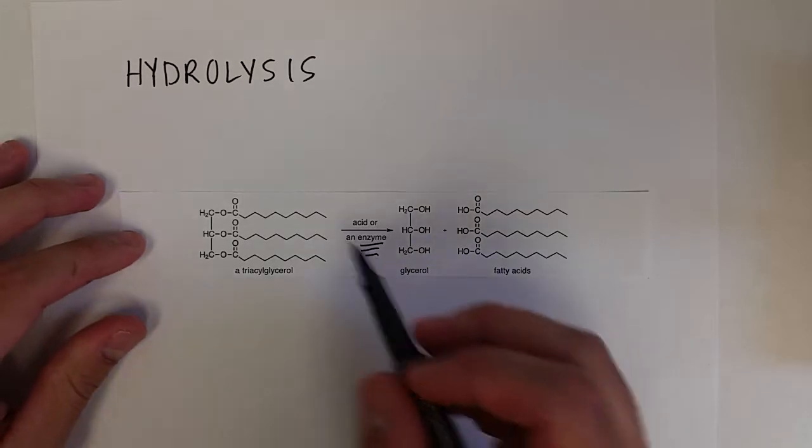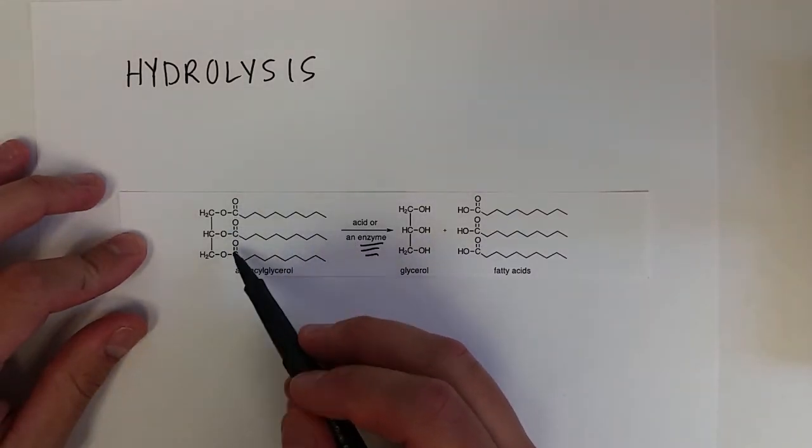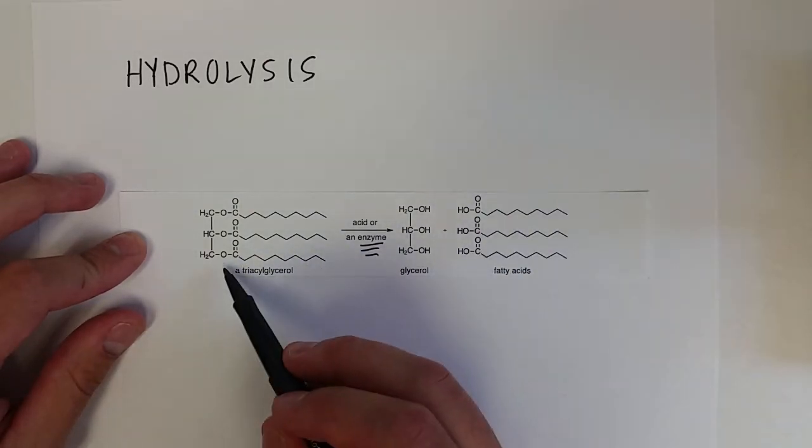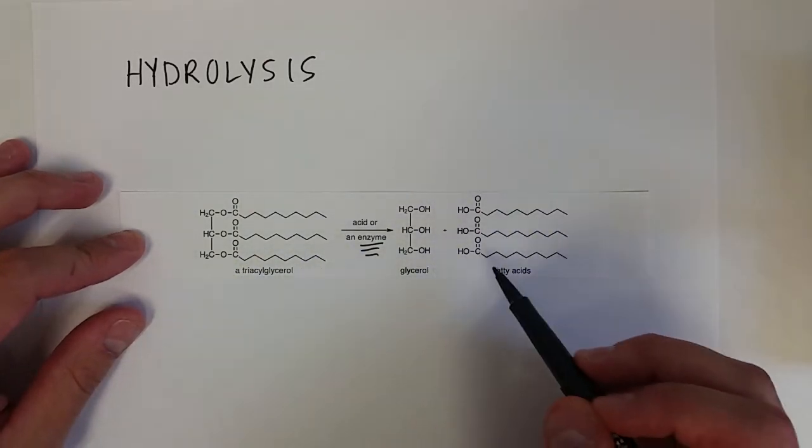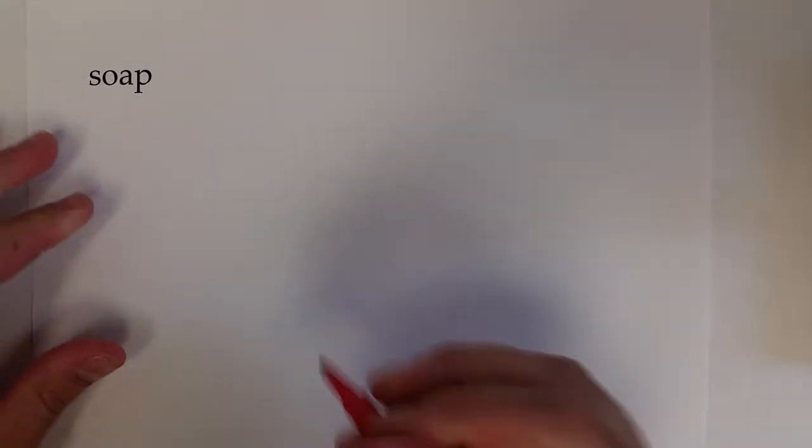So we're taking water, adding it to each of the ester bonds of the triacylglycerol to produce the glycerol and the fatty acid. Another reaction we could talk about involving fatty acid would be the production of soap through what's known as a saponification reaction.